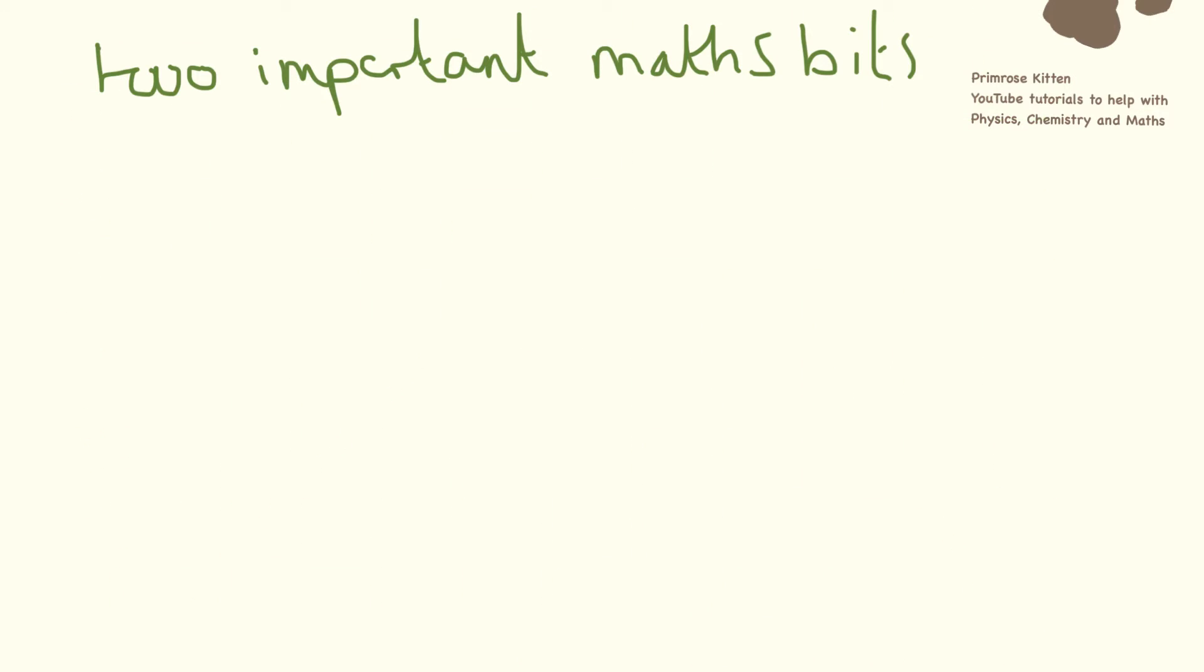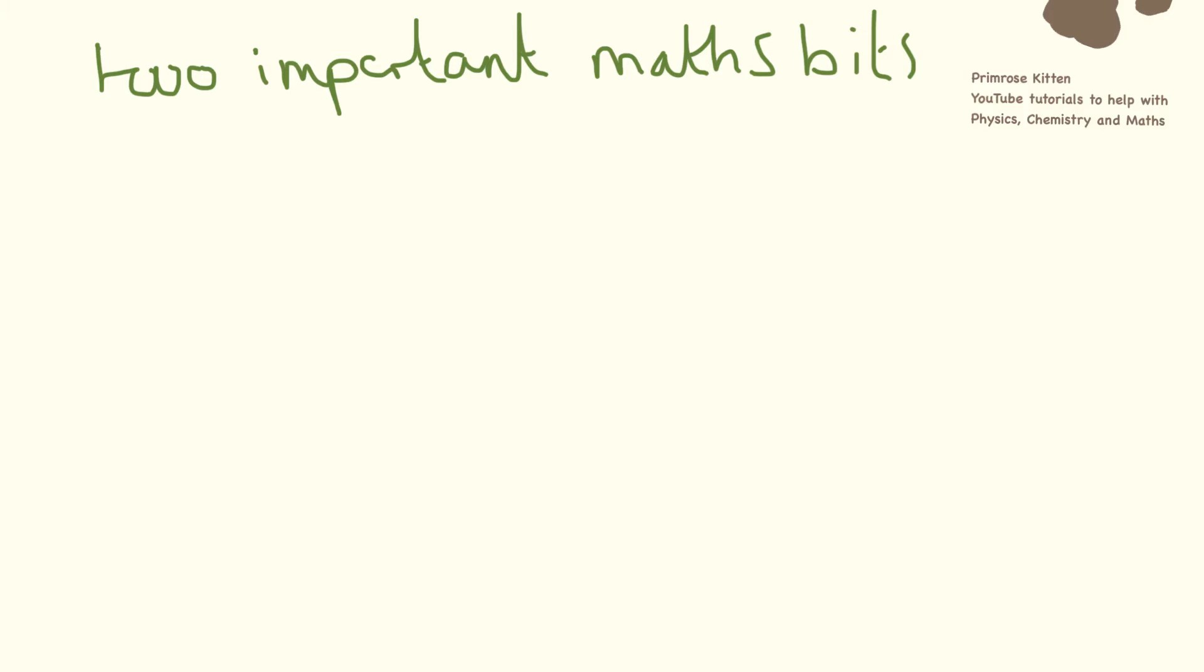There are two really important maths bits you need to know. Firstly, how to work out acceleration from the graph. This is the sort of thing you will get on your formula sheet. So this is acceleration. This is the final velocity. This is the initial velocity.